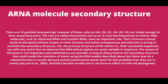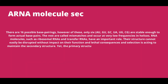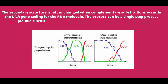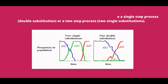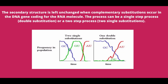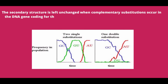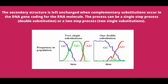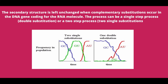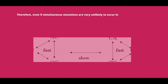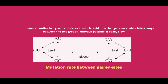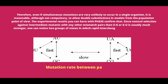The secondary structure is left unchanged when complementary substitutions occur in the DNA gene coding for the RNA molecule. The process can be a single-step process (double substitution) or a two-step process (two single substitutions). Therefore, even if simultaneous mutations are very unlikely to occur in a single organism, it is reasonable, although not compulsory, to allow double substitutions in models from the population point of view.